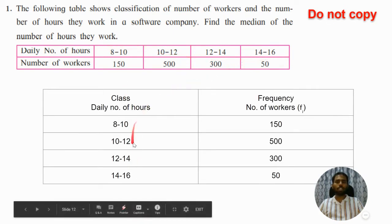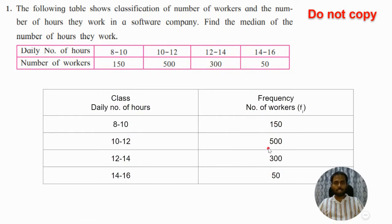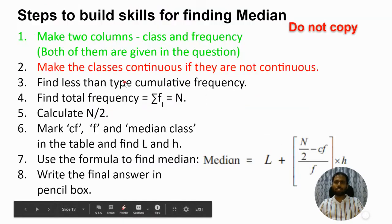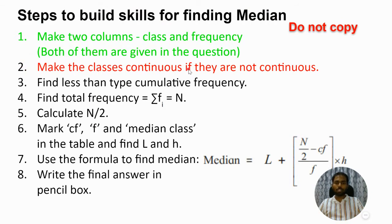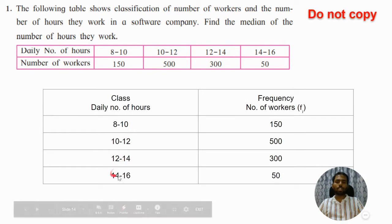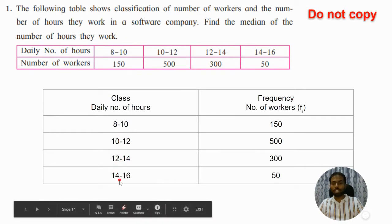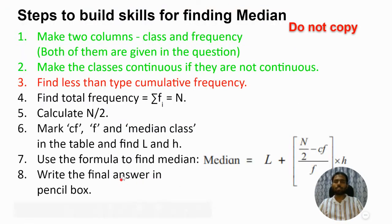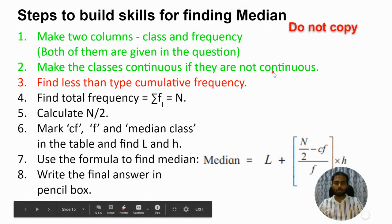We are done with step one. Now step two: make the classes continuous if they are not continuous. Let's check — upper limit 10 and lower limit 10 match, upper limit 12 and lower limit 12 match, 14 and 14 match — so this is already a continuous class. We don't need to make it continuous. Step two is also taken care of.